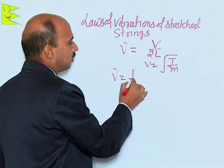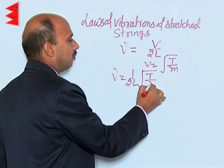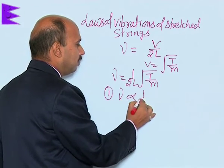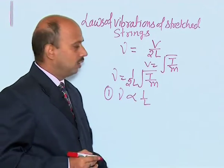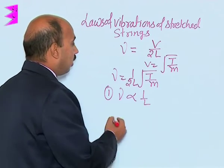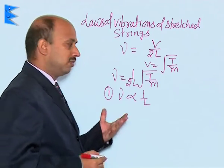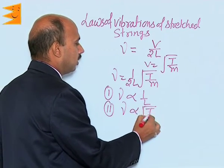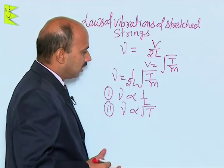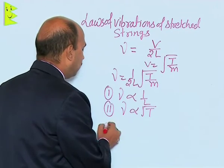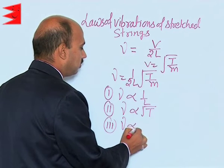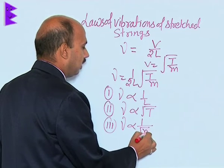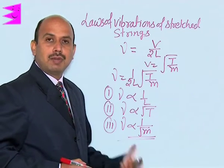We can write frequency ν = (1/2L) × √(T/m). First, frequency is inversely proportional to length — this is called the law of length. Second, frequency is directly proportional to the square root of tension T — this is called the law of tension. Third, frequency is inversely proportional to the square root of m, the mass per unit length — this is called the law of mass.